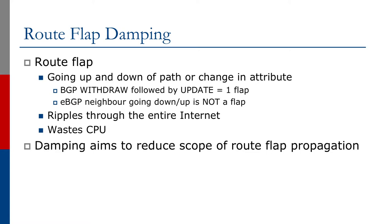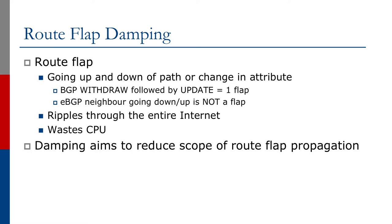A route flap is basically the going up and down of a path, or a change in a BGP attribute. A BGP withdraw followed by an update is a flap — the prefix is withdrawn from the network and then re-announced, and that is considered a single flap. The physical going up and down of an eBGP neighbor session is not considered a flap. One thing many operators were not aware of in the earlier years was that a change in a BGP attribute also contributed to route flap.